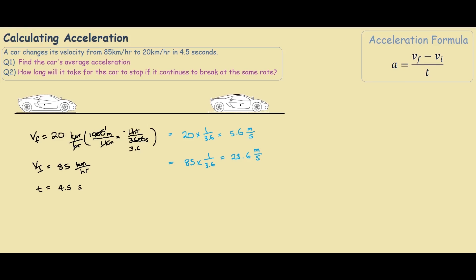Now that our units are all consistent, we can use the acceleration formula. So we have a, the acceleration equals v final, 5.6, minus the initial velocity, 23.6. This is all over 4.5 seconds. And this works out to be negative 4 meters per second squared. So the units for acceleration is meters per second squared.